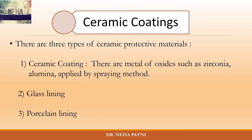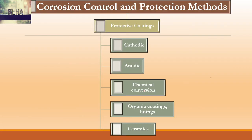Ceramic coatings are another option — ceramics are basically oxides or a mixture of metal oxides that can be sprayed onto your material. You also have glass linings and porcelain linings. In summary, protective coating is one method by which you can protect your material: in cathodic coating the coating material is cathodic to the base metal, and in anodic coating the coating material is anodic to the base metal.